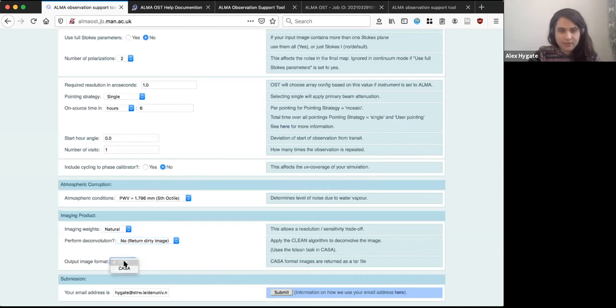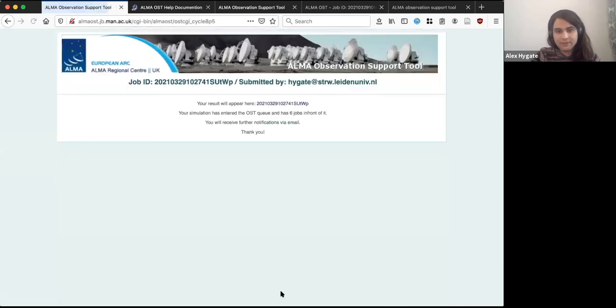And you can just decide whether you actually want to clean, or whether you just want to make an image without cleaning, just to return the dirty image. And then you can choose your output format. So you can choose the fits file format, which is obviously very convenient and portable, or you can choose the CASA format. Even if you do choose the CASA format, you can export it later to fits in CASA. Then you must provide your email address because you'll be given information about your simulations there. And then you hit submit, and you're done. And then your result will appear at this website, and you're told, yeah, so in this case, there are six jobs in front of it, and then you need to wait.